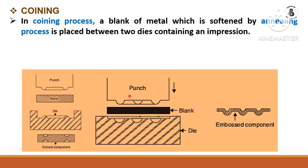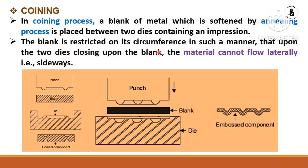According to the required shape, the die material and the shape of the punch are selected. You can see the shape of the punch and die here. When the punch is lowered against the die material with the blank in between, it will permanently change the shape — and in the final result, you can see the embossed component. The blank is restricted on its circumference in such a manner that upon the two dies closing on the blank, the material cannot flow laterally — that is, sideways — so the material stays between punch and die.